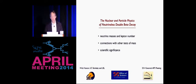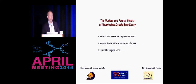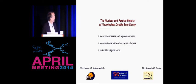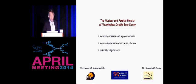It's a great pleasure to be here. I've really enjoyed this week in Savannah and appreciate the invitation. I want to take up from the historical note that Hamish introduced to discuss double beta decay in the context of early developments in weak interactions. I'll try to take you through the connections between lepton number and neutrino masses, the connections with other tests we have today of neutrino mass, and finally the scientific significance of the current generation of neutrinoless double beta decay experiments.